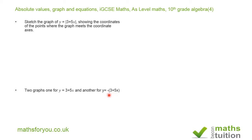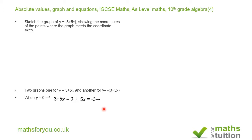Now, we want to find out where both graphs touch the x-axis. Where that happens, the y value is 0. So, if y is 0, we replace y by 0, and our equation becomes 3 plus 5x is equal to 0. If we subtract 3 from both sides, we get 5x is equal to minus 3. Dividing both sides by 5, we get x is equal to minus 3 over 5.